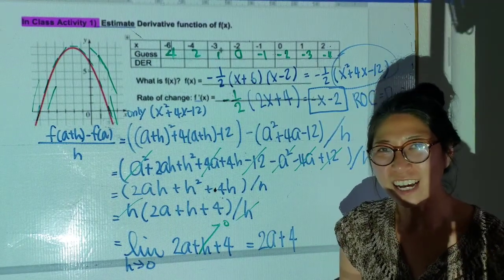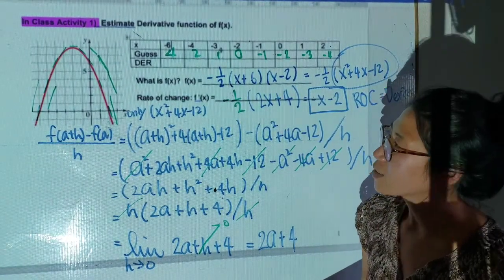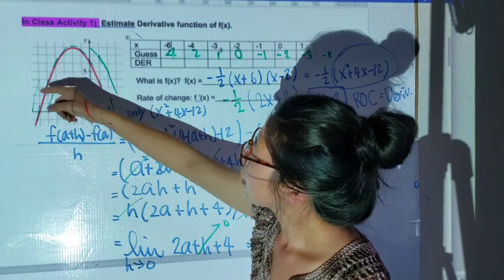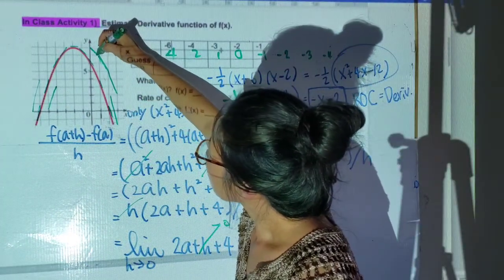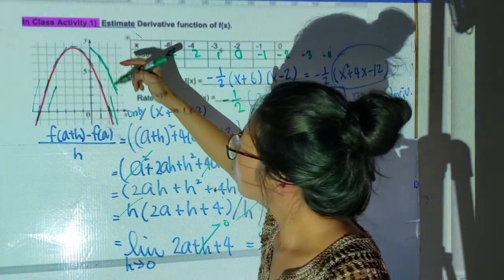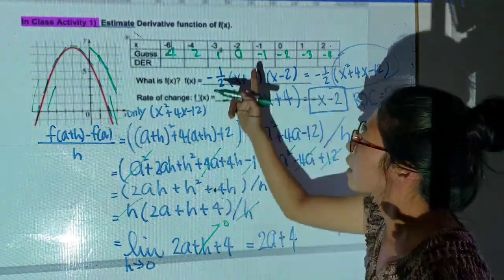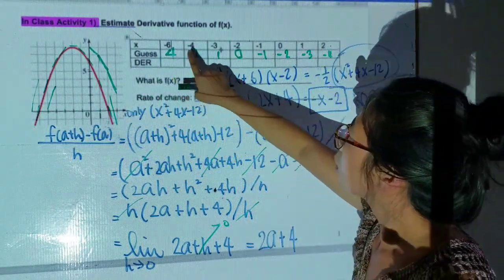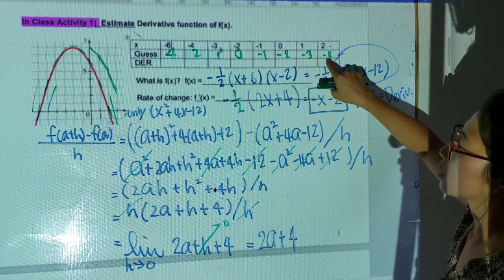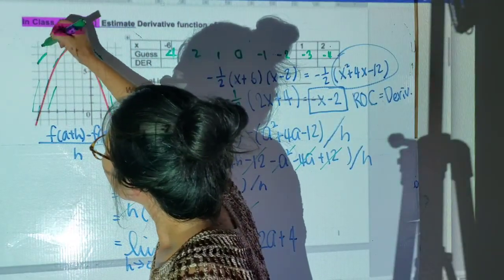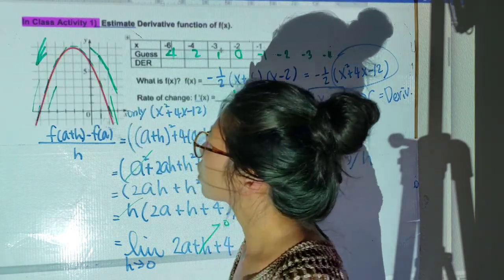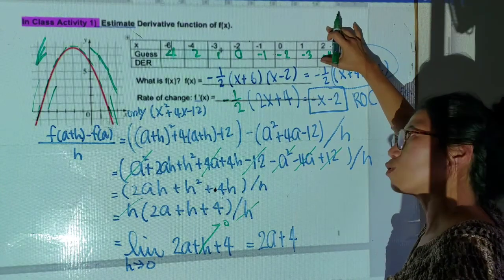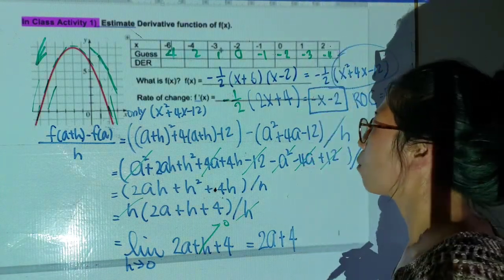How did the in-class activity go? I drew reference lines at slopes -1, -2, -3 so I can compare parallel lines and guess the slope at each x-point. At x = -6, I guess about 4; continuing: 2, 1, 0, -1, -2, -3, -4. My estimates don't have to be exactly the same — they should be around those numbers as an estimation.